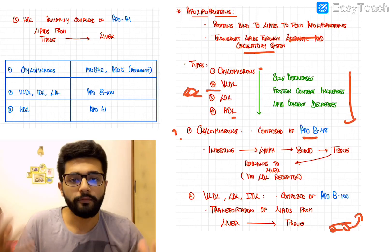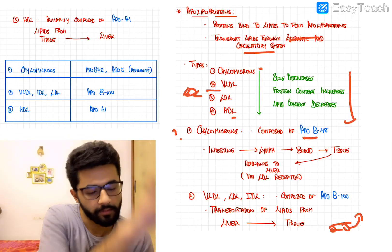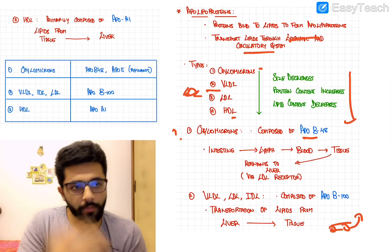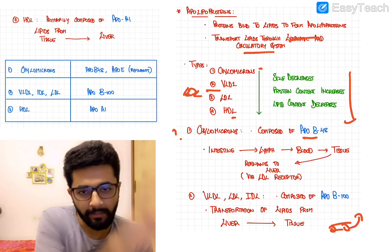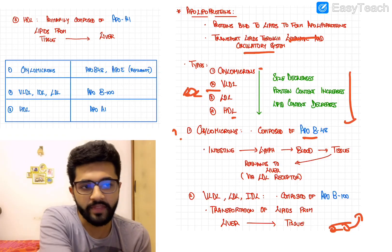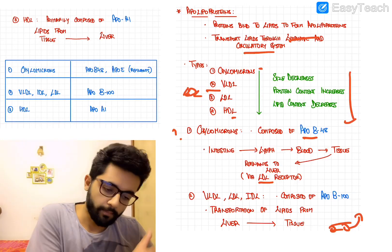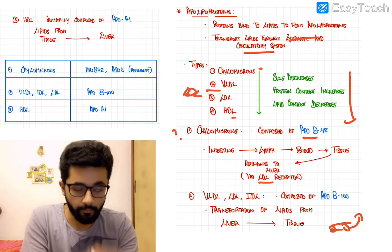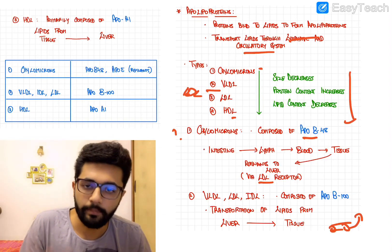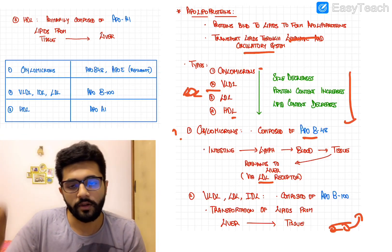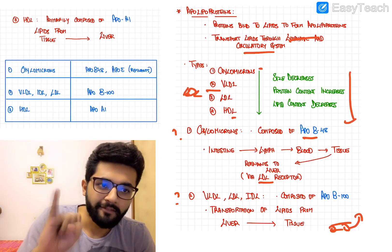Chylomicrons transport lipids from the intestine to the rest of the body. Lipids absorbed from the intestine form chylomicrons composed mainly of Apo B48, travel via lymphatics into the blood, and are distributed to tissues. After tissues use the lipids, the remaining remnant chylomicrons are taken back to the liver via LDL receptors. This completes the intestinal lipid absorption and transport cycle.